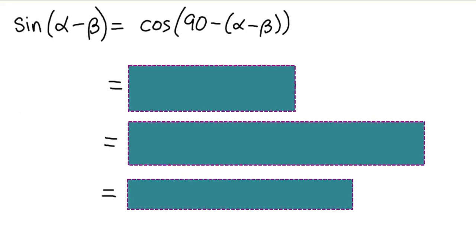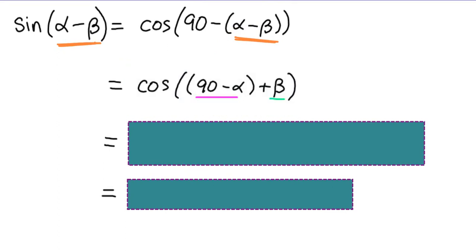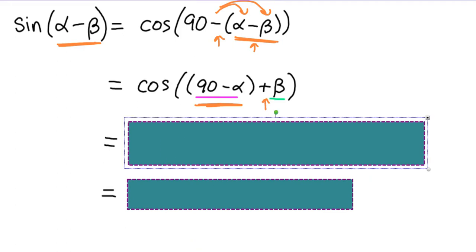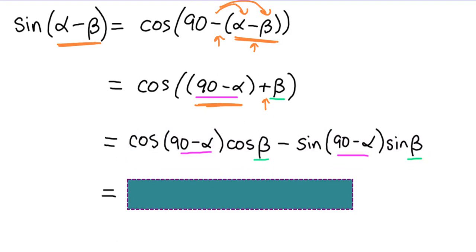Now let's go through the process to find what sine of alpha minus beta is. It's kind of similar — I've used a co-function identity: the sine of an angle equals the cosine of 90 minus the angle. And then I distributed the negative. So we have the cosine of 90 minus alpha as our first angle, and then because we had minus a negative, it would be plus the other angle. So 90 minus alpha is our first angle, beta is our second angle, and it's the cosine of one angle plus another — and we have an identity for that. The cosine of one angle plus another is the cosine of the first angle times the cosine of the second angle minus the sine of the first angle times the sine of the second angle.